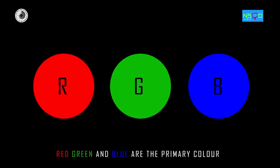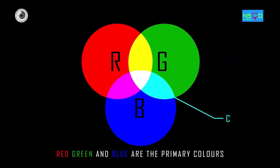Red, green and blue are the primary colours of light, also known as additive primaries. They can be combined in different proportions to make all other colours.